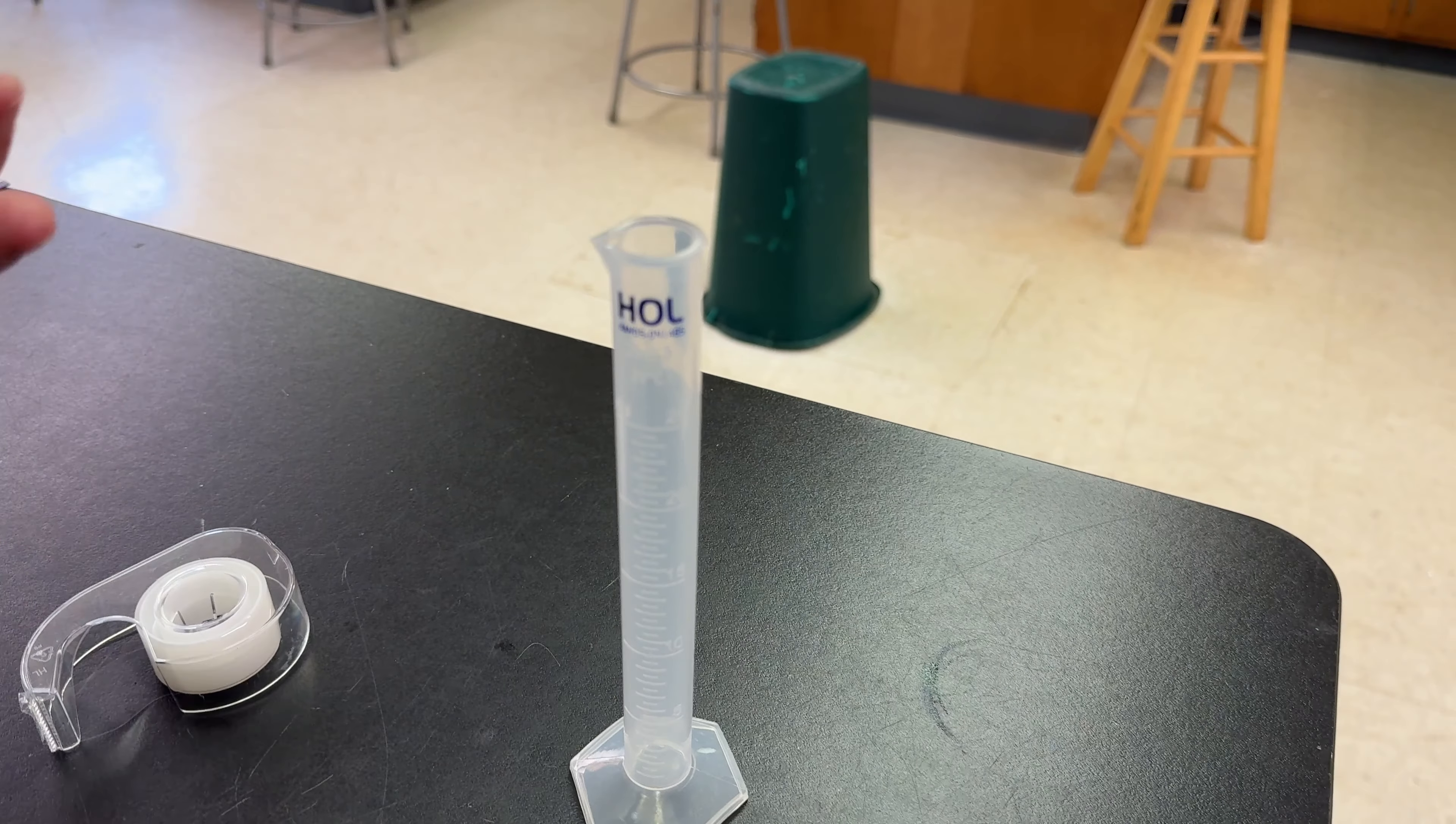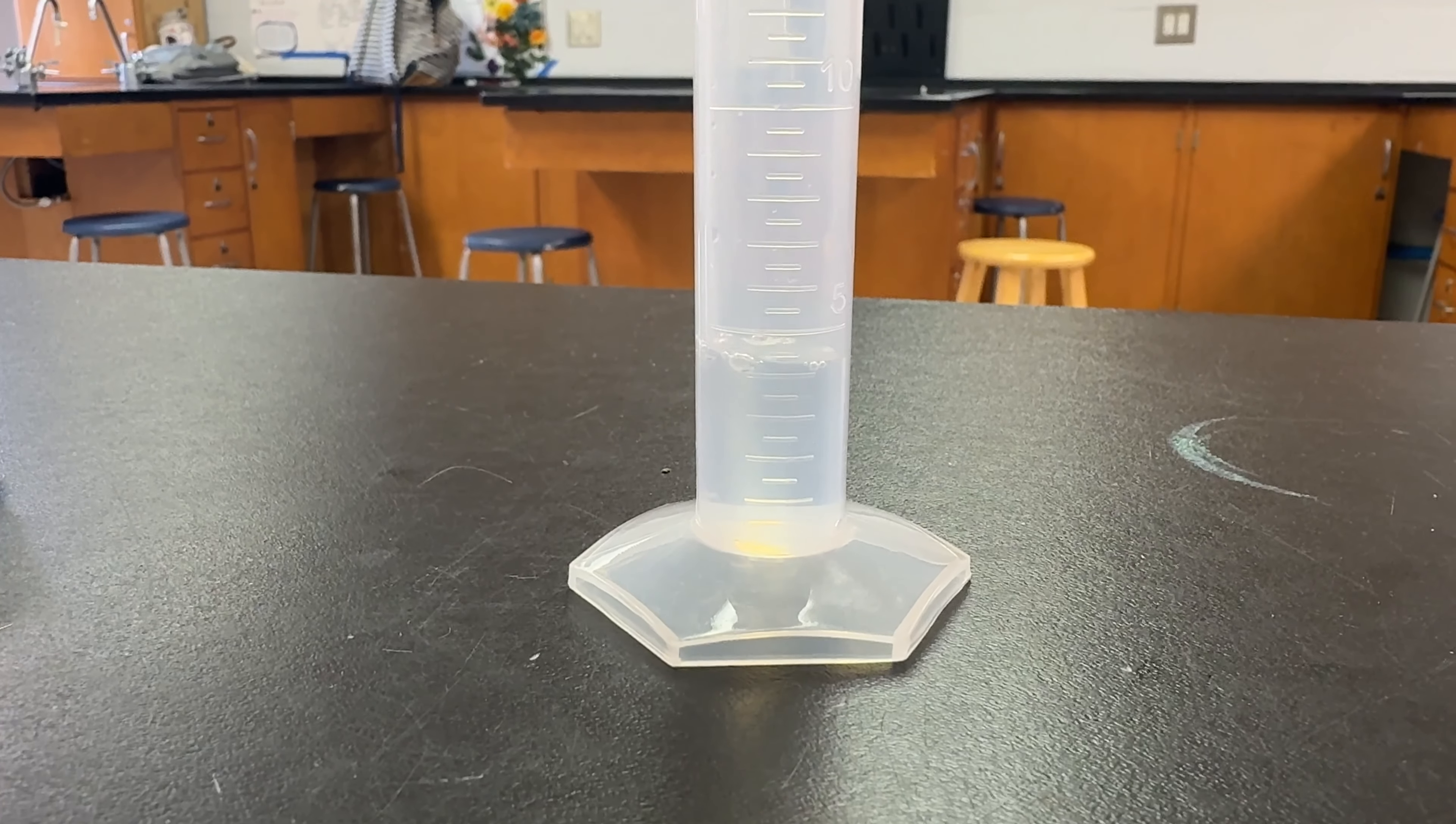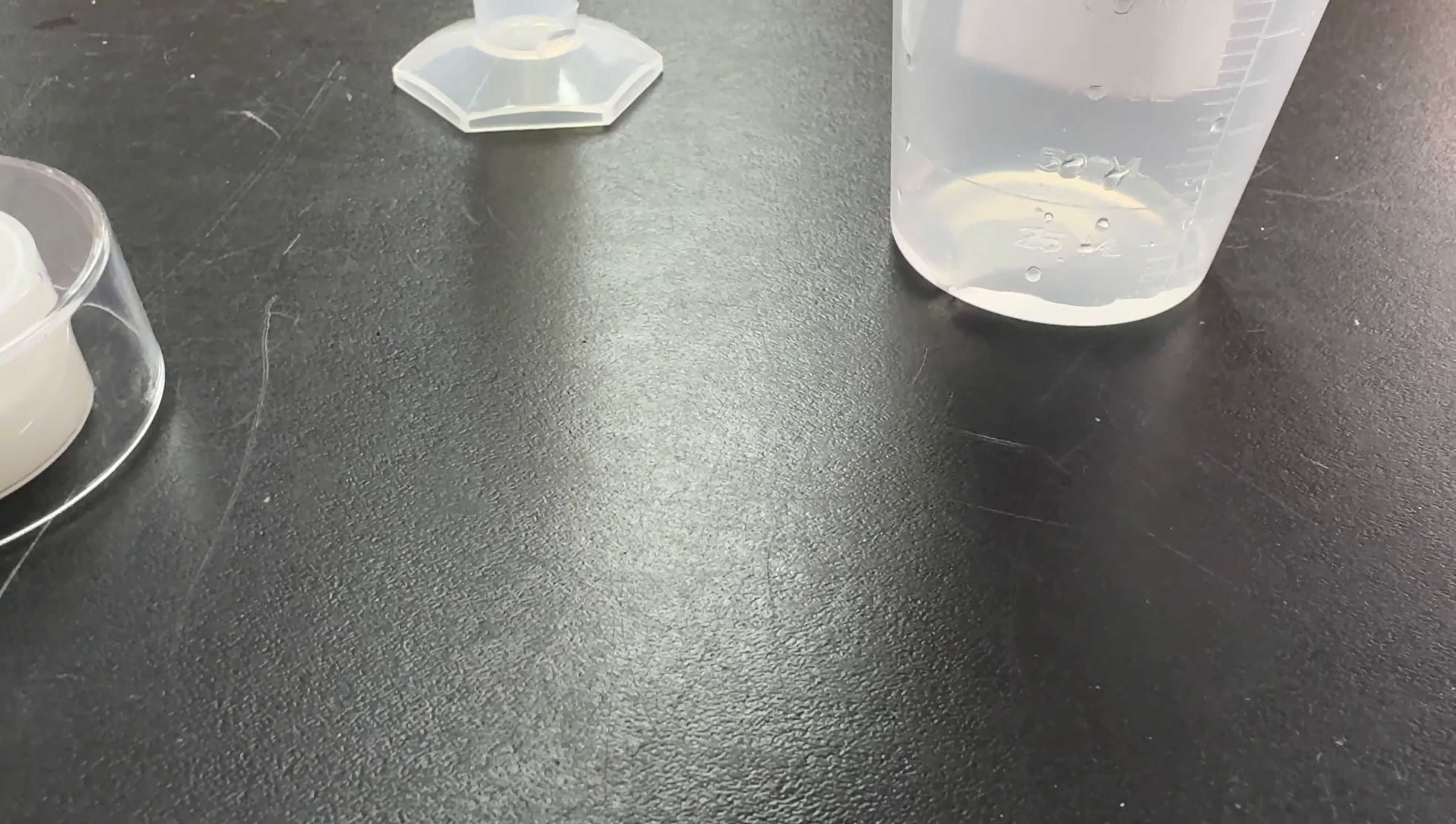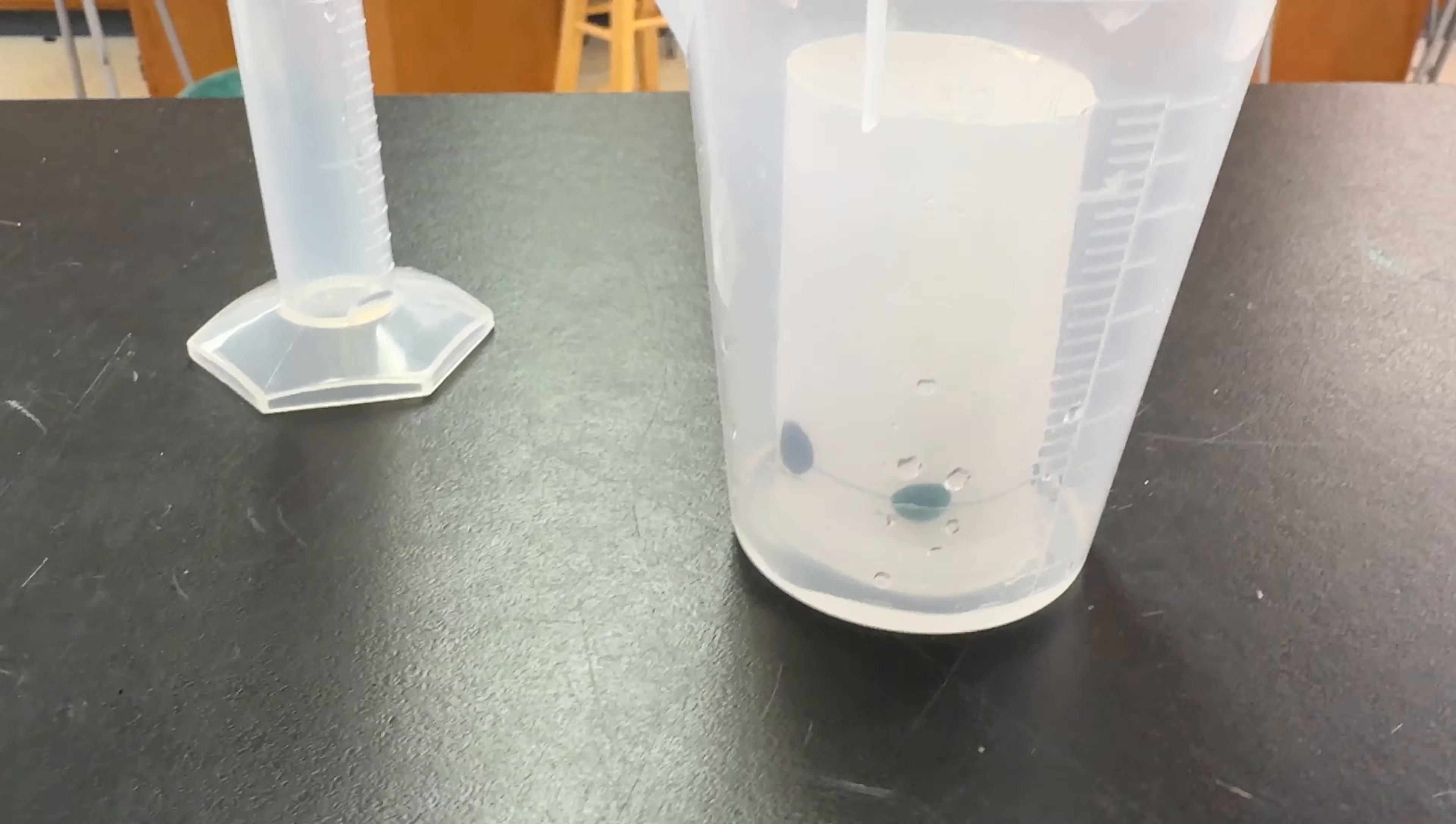Step six: put three to four milliliters of distilled water into a 150 milliliter beaker to obtain a depth of about three millimeters. You're going to put the paper cylinder into the beaker with the spots down.